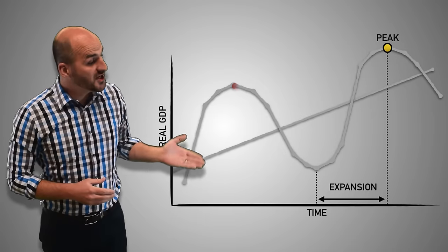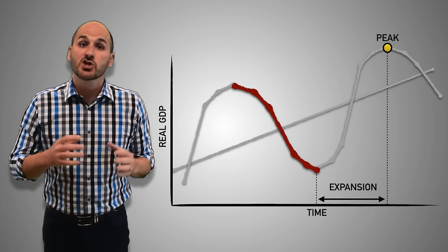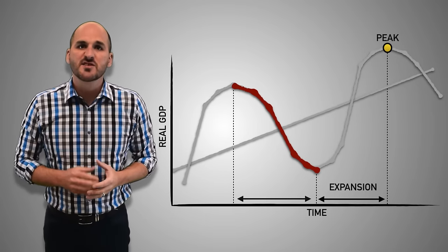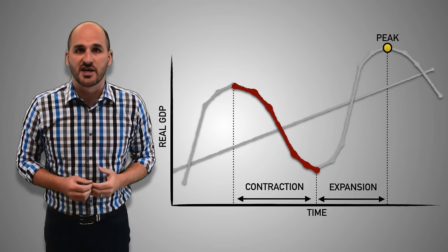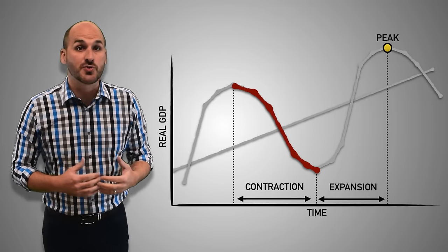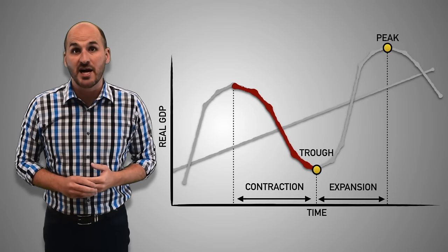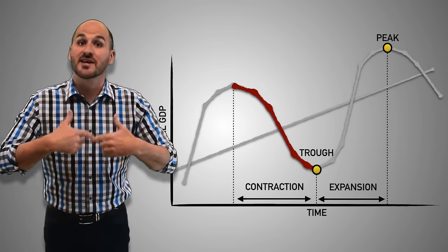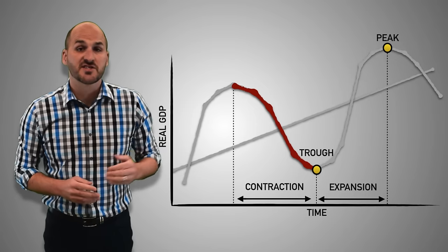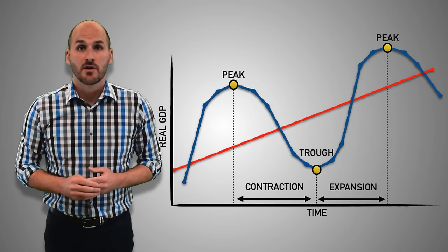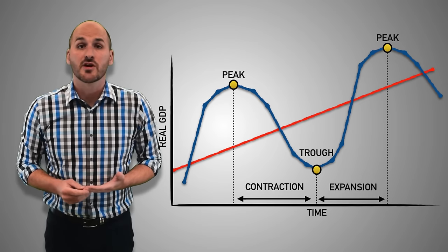Real GDP can also decrease over time, meaning the economy is shrinking or getting smaller. This is called a period of contraction or recession. Real GDP will continue to shrink until it reaches a trough, which is the lowest level of real GDP contraction before the economy begins to immediately expand. These fluctuations continue in an up and down pattern for months, quarters, or even years at a time.